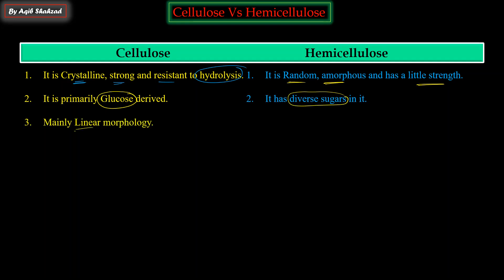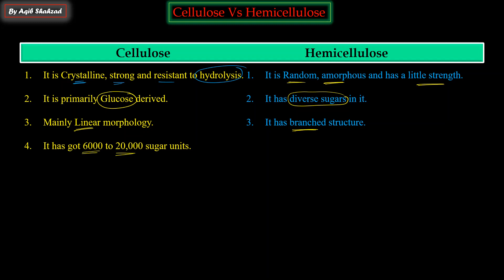The morphology of cellulose structure is mostly linear, while hemicellulose has a branched structure. Cellulose has approximately 6,000 to 20,000 sugar units, while hemicellulose has fewer - about 500 to 3,000 sugar units in it.